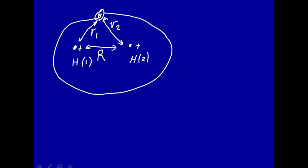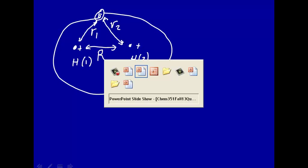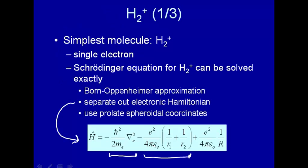So one here, that's that r1 distance, and there's another attraction between this other nucleus, that's the r2 direction, so it's e squared over 4πε0, 1 over r1 plus 1 over r2.